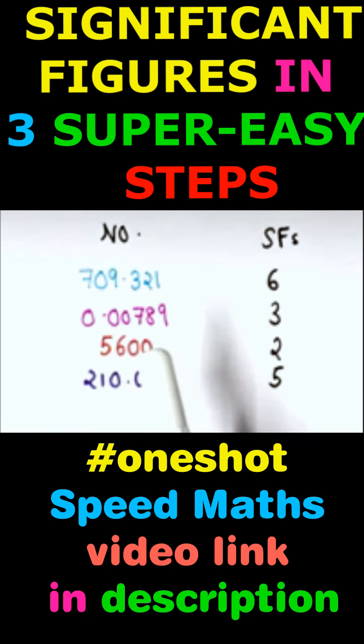For trailing zeros: if you have a decimal point in the number, the trailing zeros become significant. So this is why these digits are significant.